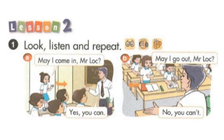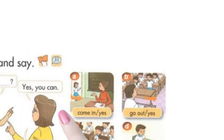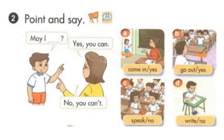Page 42. Lesson 2. Activity 2. Point and say. May I come in, Mr. Locke? Yes, you can. May I go out? No, you can't.